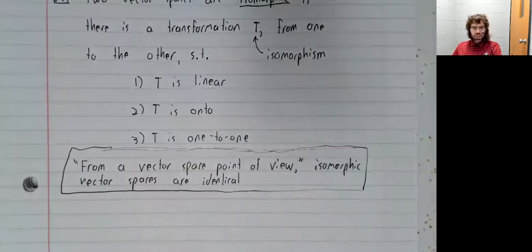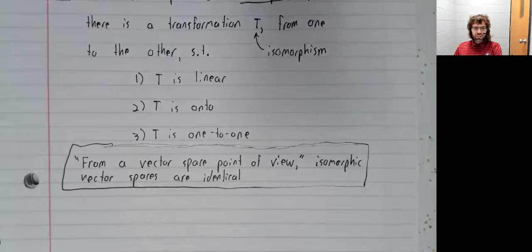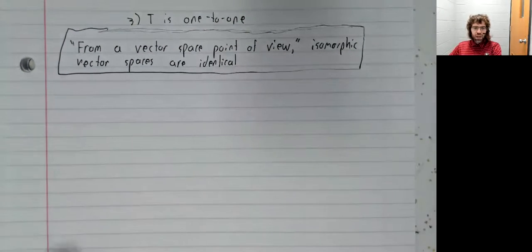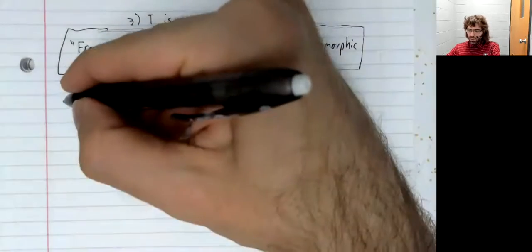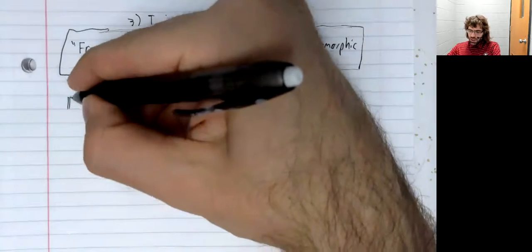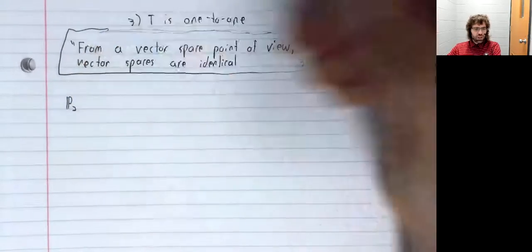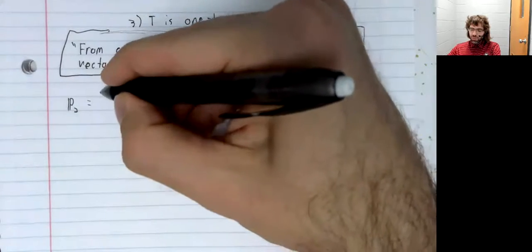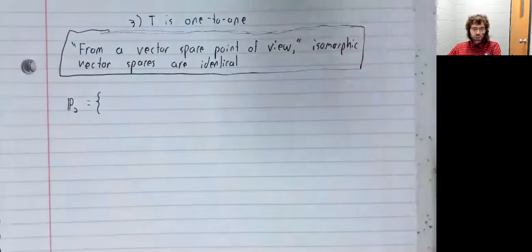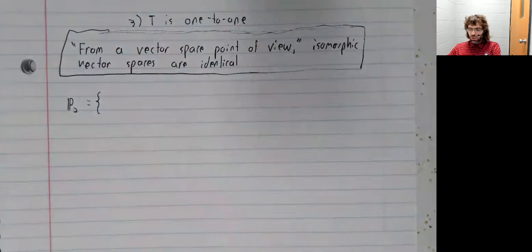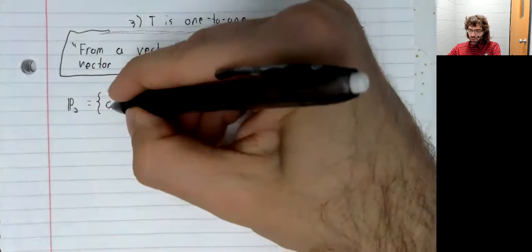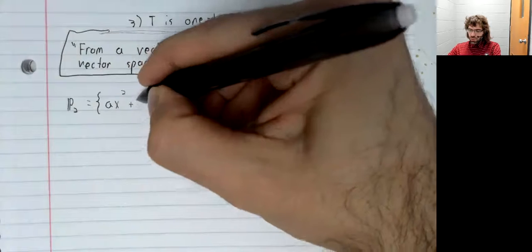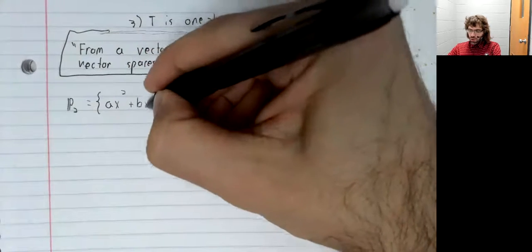Let me give an example to discuss this idea a little further. Let's look at P₂, the polynomial vector space of polynomials of degree two or less.